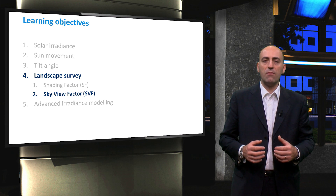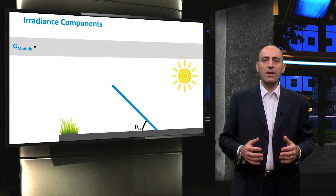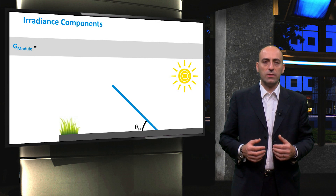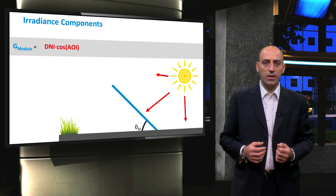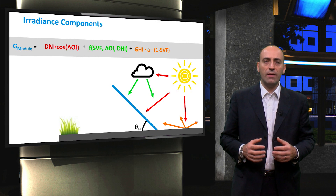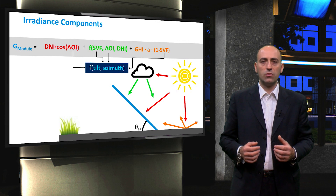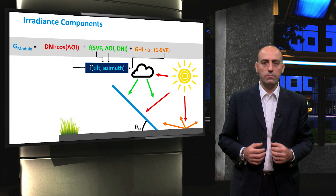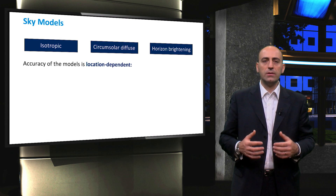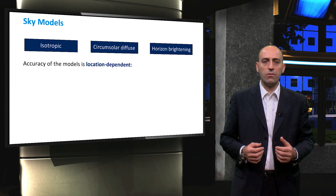First, let's recap where the SkyView factor is used in irradiance modeling. By now, you are familiar with the three different irradiance components: direct irradiance in red, diffuse irradiance in green, and albedo in orange. We derive the expressions for these components as a function of the tilt and azimuth angle of the PV module. In irradiance modeling, the SkyView factor is used in the calculation of both diffuse and albedo components of irradiance falling onto PV modules.